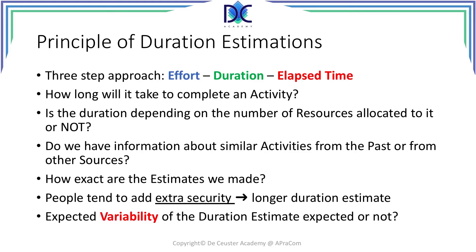Duration estimation is typically done in a 3-step approach. First, we determine the effort to complete a task or activity. From that we identify the duration, and finally we can determine the elapsed time. The main question is: how long will it take to complete an activity? Is the duration dependent on the number of resources allocated to the task or not? That is the first element to consider.